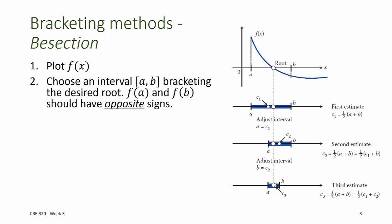Next, we choose an interval with bounds a and b that bracket the desired root that we're looking for. The root should appear on the interval from a to b. The bracketing method will only work if f at a and f at b have opposite signs.